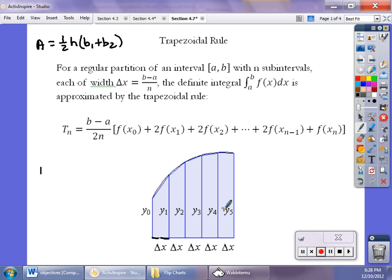If the delta x is constant, you can apply this formula. Often on the AP exam they'll let delta x not be constant, and then you just find the area of each trapezoid individually. That's going to approximate the value of this integral from a to b of f(x) dx.